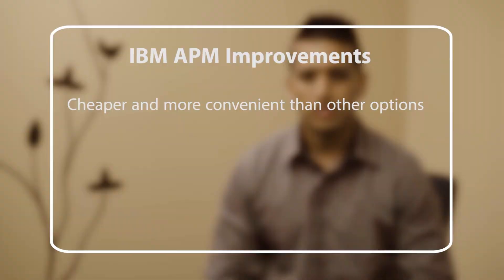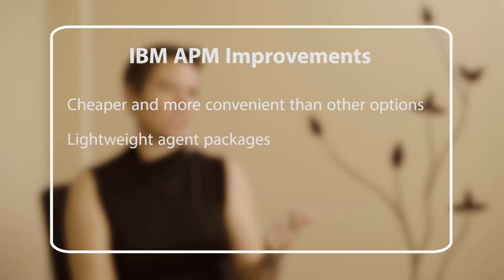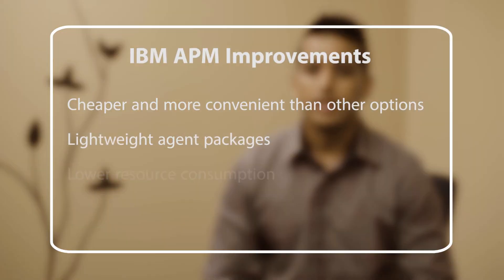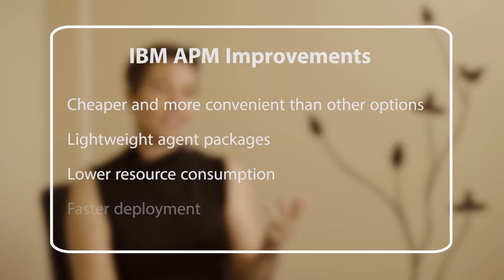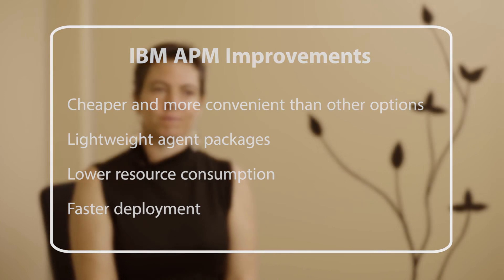Some of the improvements in the new IBM APM architecture are: it is cheaper and more convenient, the agent packages are lightweight, it has a lower resource consumption, and deployment is faster.